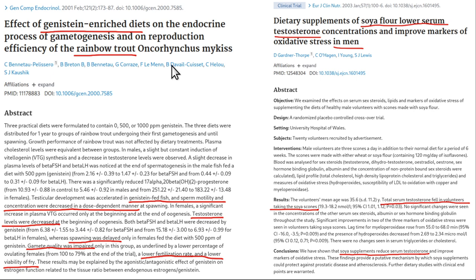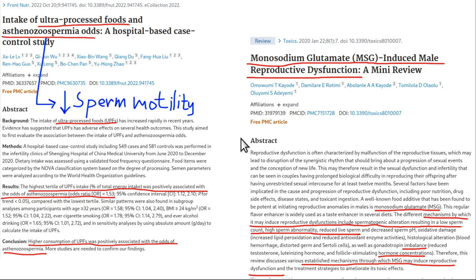Genistein, the estrogenic isoflavone from soy, damages multiple vertebrate species. Genistein-fed fish had decreased sperm motility. In men, soy caused increased oxidative stress and reduced testosterone levels. Male volunteers exposed to soy had lowered testosterone levels. Humans fed ultra-processed foods had decreased sperm motility — the technical term is asthenozoospermia. Eating processed food with soy, glyphosate, corn with atrazine, and MSG — which is associated with reproductive dysfunction — is making people infertile.